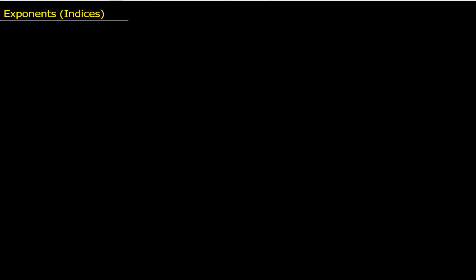Let us discuss some of the special cases of exponents, starting with negative exponents. One example would be x raised to the power minus n. The easy way of remembering this is that whenever there is a negative exponent, you simply flip it over. So this is equal to 1 divided by x raised to the power n. This is the easy way to solve negative exponent problems.